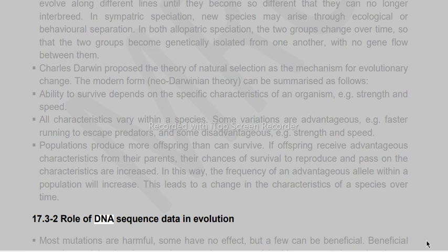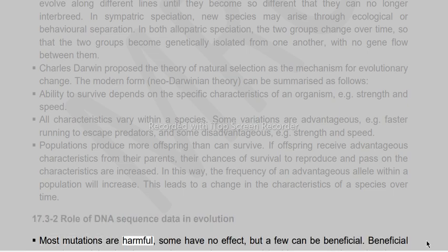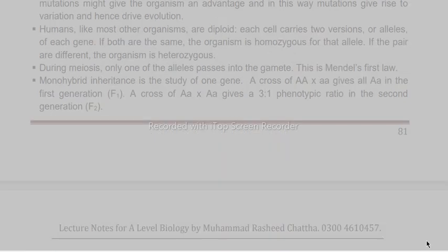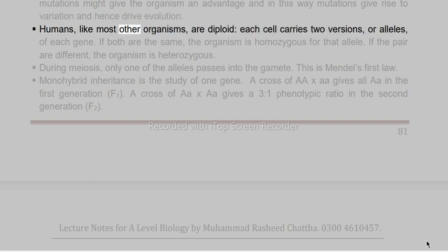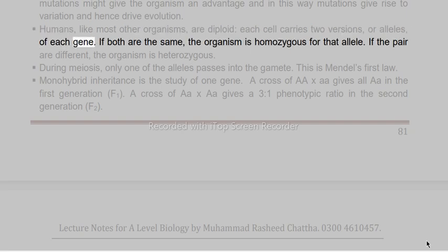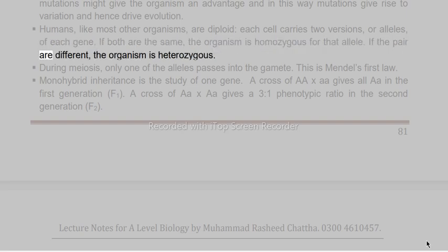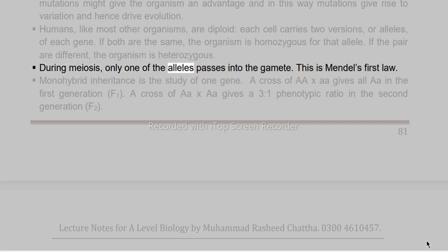Most mutations are harmful, some have no effect, but a few can be beneficial. Beneficial mutations might give the organism an advantage — in this way mutations give rise to variation and drive evolution. Humans, like most organisms, are diploid; each cell carries two versions (alleles) of each gene. If both are the same, the organism is homozygous. If the pair are different, the organism is heterozygous. During meiosis, only one of the alleles passes into the gamete. This is Mendel's first law.